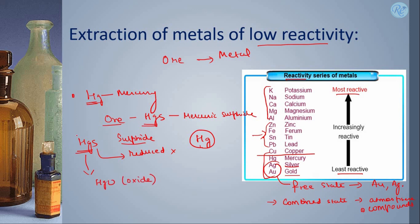As I said, mostly ores will be present as oxides, carbonates, or sulphides. Here we found this is present in the sulphide form, but it is very easy to reduce oxides into metals than sulphide into metal.